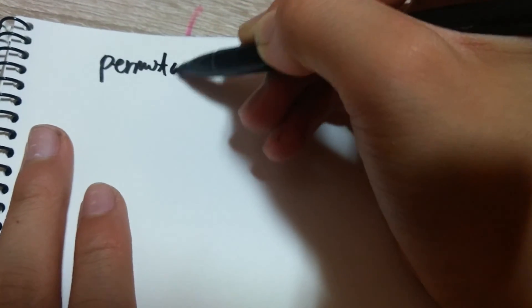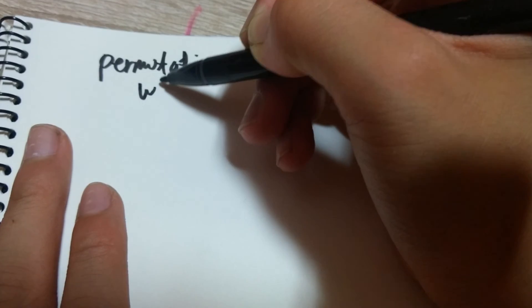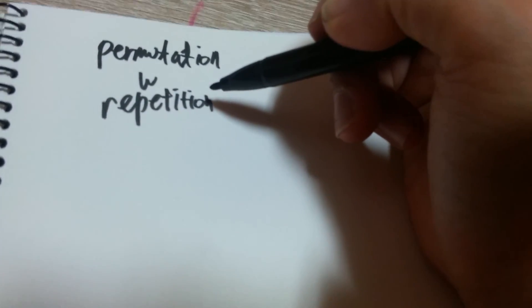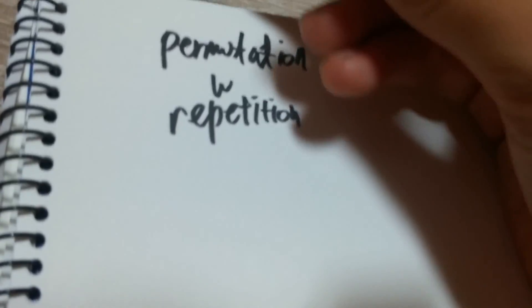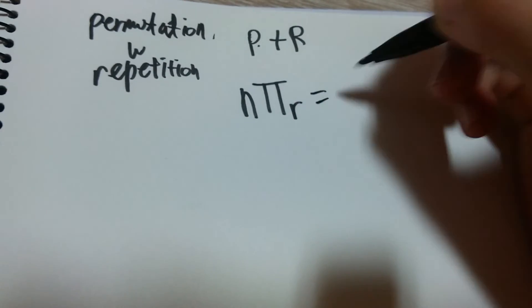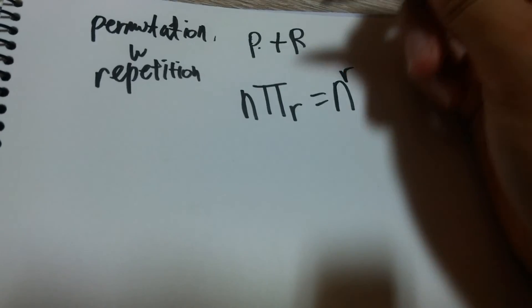Now let's talk about some deeper stuff. The first topic is permutation with repetition. It may sound strange, but it's really simple — it's like a permutation but you allow repetition. You write it as nΠr, and it equals N to the power of R. So permutation with repetition is easy.